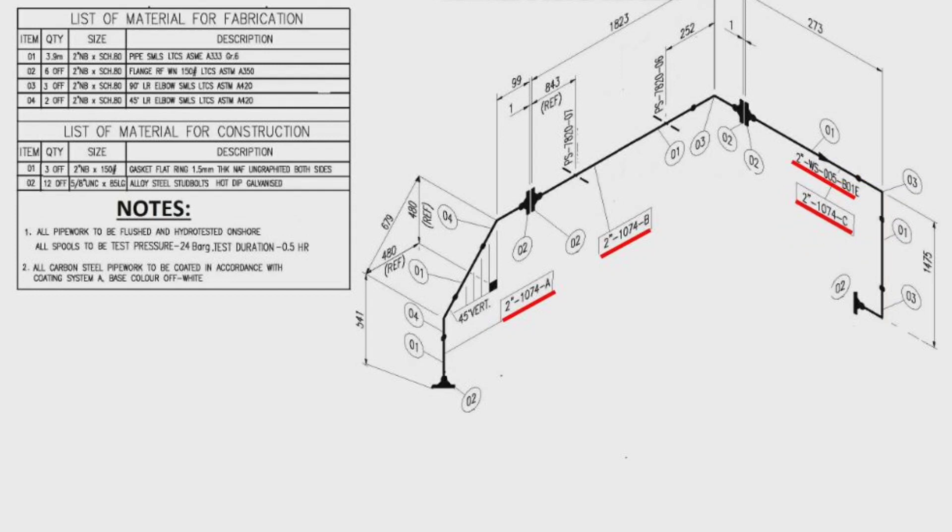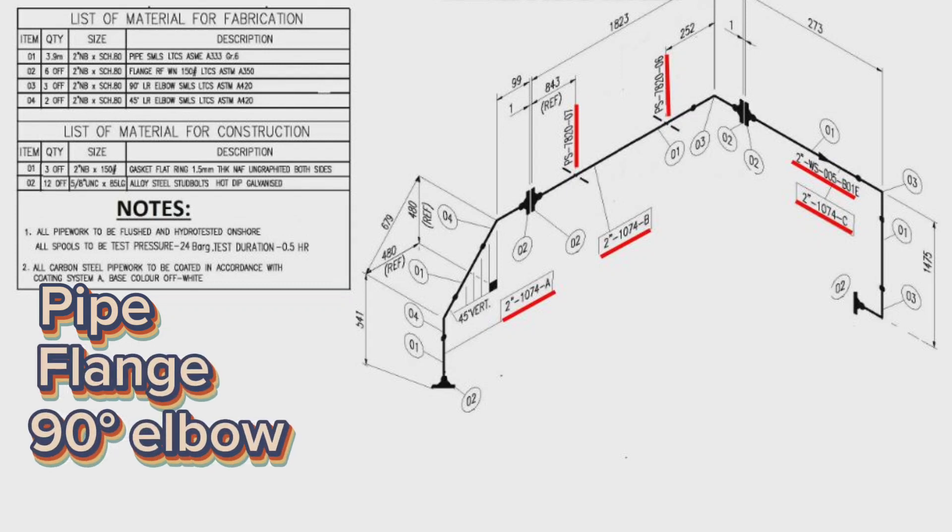There are two pipe supports in this pipeline. First support number is PS-7820-07 and second support number is PS-7820-06. There are some pipe pieces, six off-weld neck flanges, three off-90-degree elbows, and two off-45-degree elbows used in this pipeline.